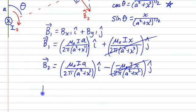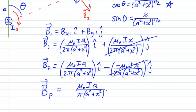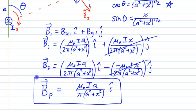So the total field at point P is going to be basically the two x-components added together. So the two cancels out in the denominator, it's μ₀Ia over π(a² + x²), not to the 1/2, not anything like that, and it's just î. So this is our final answer to part B.